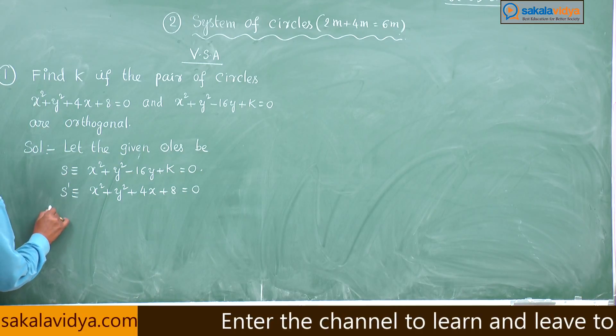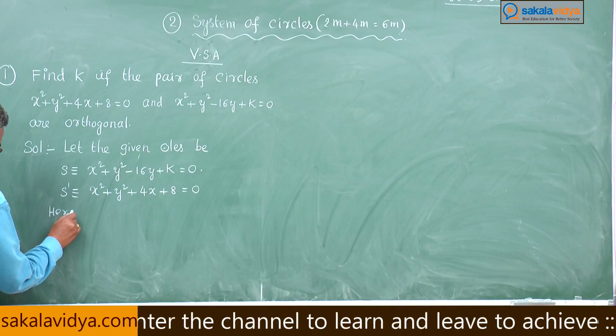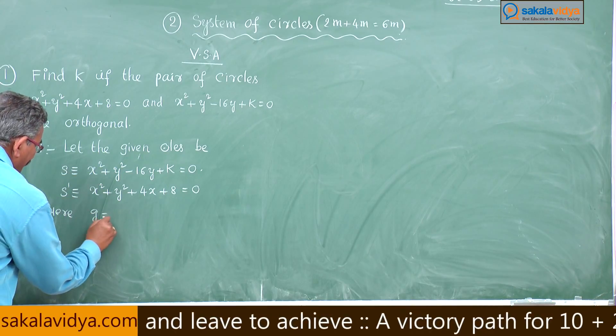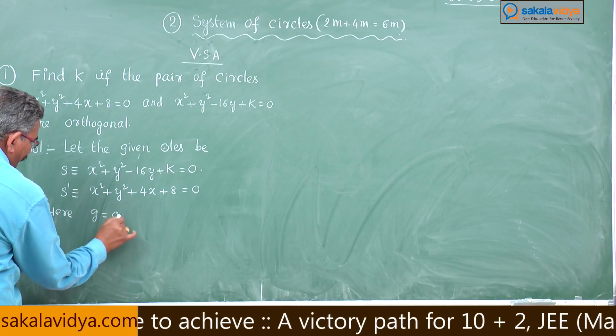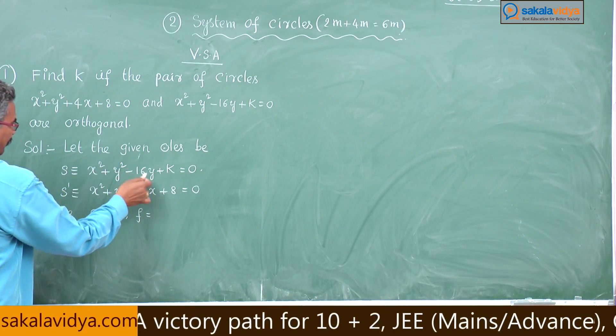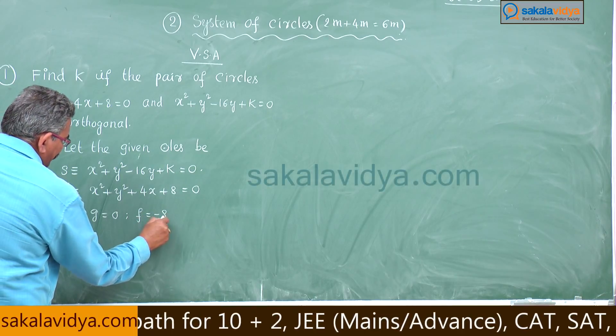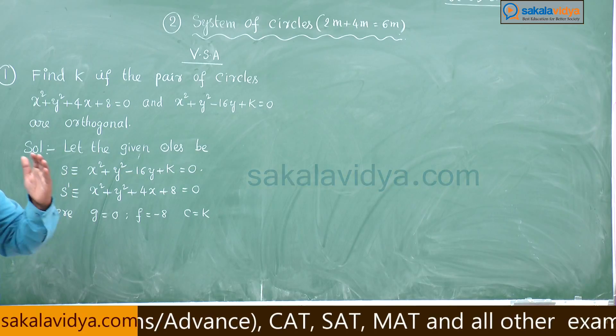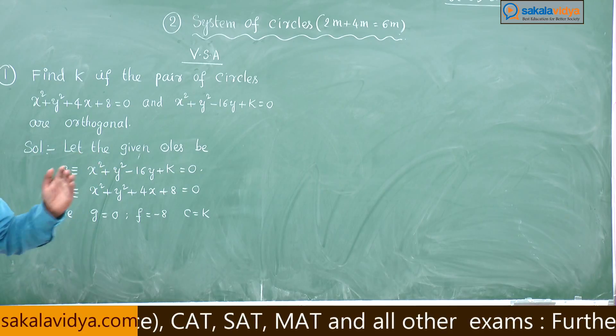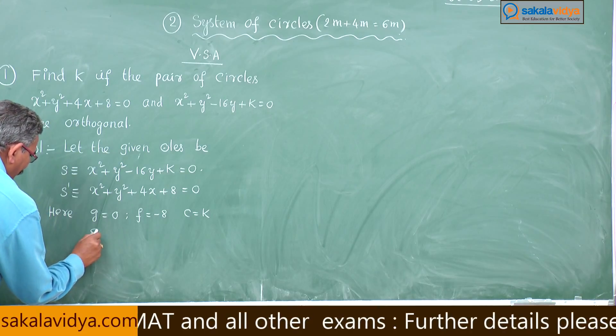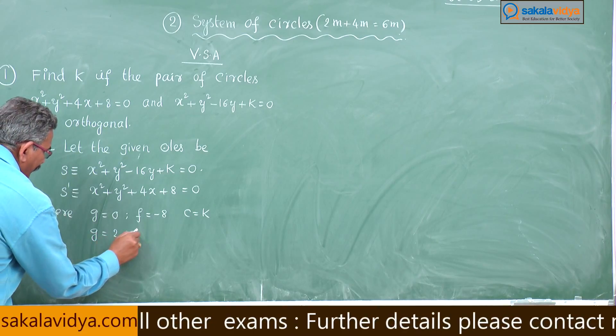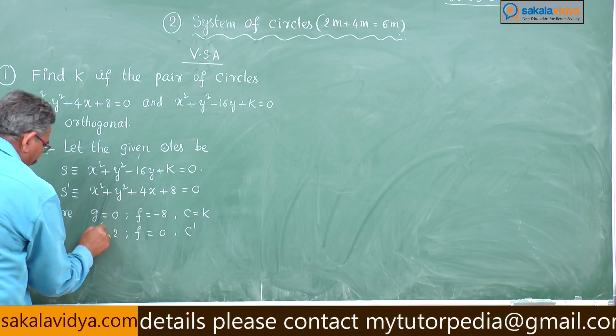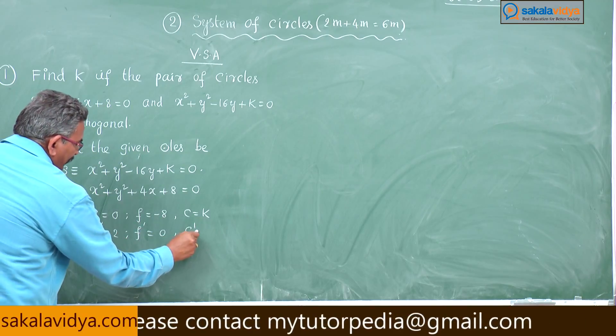Now, here what is g? g is absent because x coefficient is absent: 0. What is f? Half of the value, that is -8. c is equal to k. In a similar manner, here g' value will be 2, f' = 0, whereas c' is equal to 8.